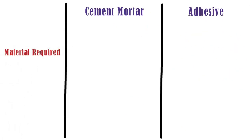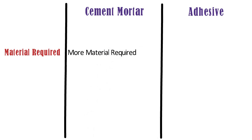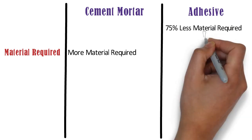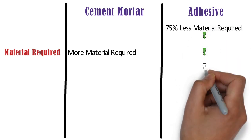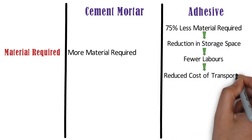Materials required. In case of cement mortar, the joint thickness is 8-12 mm, hence more material shall be required as compared to AAC block adhesives. Whereas, in case of AAC block adhesives, the joint thickness is 3-4 mm, hence 75% less material shall be required as compared to conventional mortar. This leads to reduction in storage space of material, fewer laborers to handle, and also reduced cost of transportation.